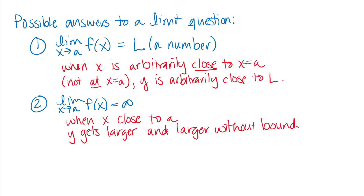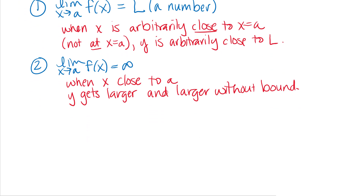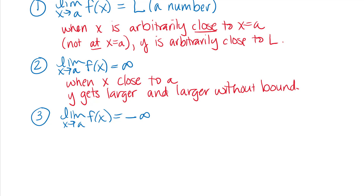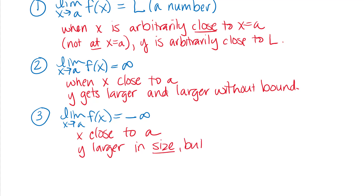We can have another couple of possible answers to a limit question. Instead of the outputs getting larger and larger in the positive direction without bound, we might have the limit as x approaches a of f(x) equal negative infinity. This means pretty similar to the positive infinity case, but the y values get larger in size but negative — so when x is close to a but not at a, y is larger in size but negative in direction. We have to be a little careful about saying a large negative number because of how inequalities work with negative numbers.